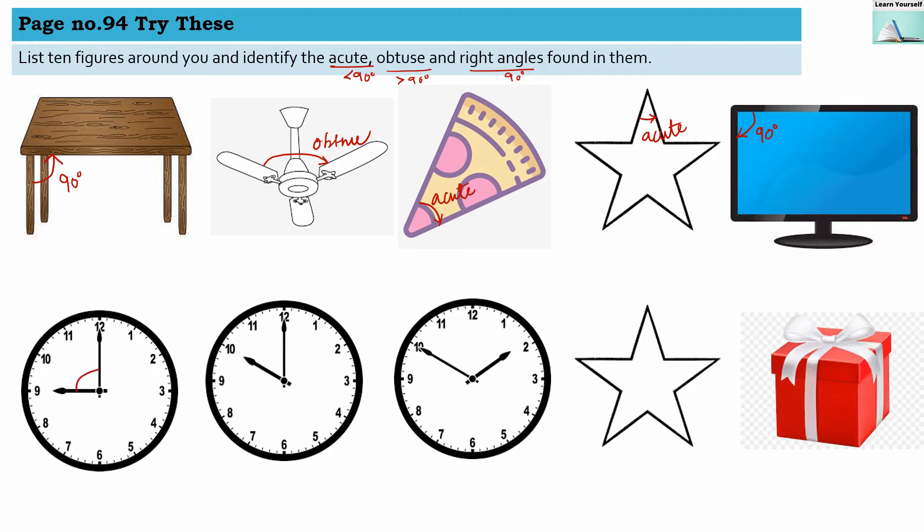When a clock shows 9 o'clock, this is a right angle, 90 degrees. When a clock shows 10 o'clock, this is an acute angle, less than 90 degrees. When a clock shows 1:50 AM or PM, 10 minutes to 2 o'clock, at that time this angle is obtuse.